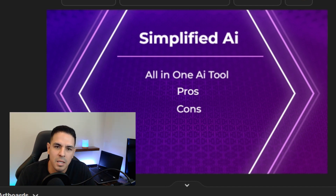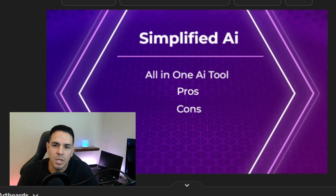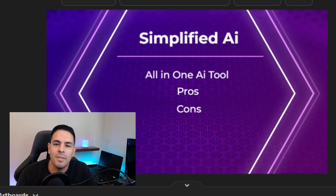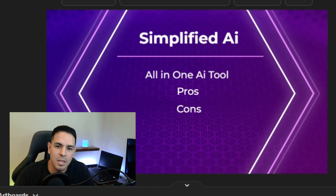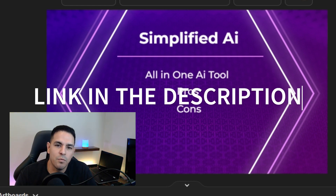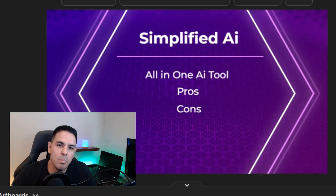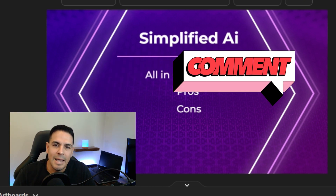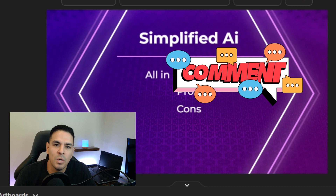This is a review of Simplified AI — a great all-in-one tool covering everything from blog writing to social media, covering every aspect of content creation. The only con is that it has a bit of a learning curve with so many details to learn, and it's a little time-consuming to get used to everything. Once you do, it's a great tool. I'll put a link in the description to try it for free. If you enjoyed this video, hit like and subscribe, and leave any questions in the comments.